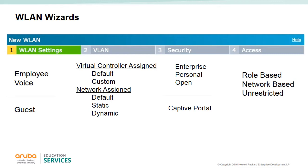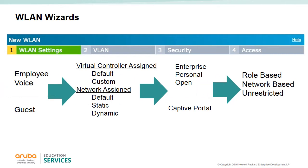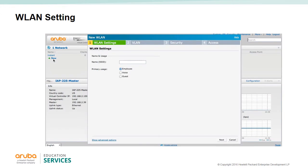The wizard is an easy way to configure the SSIDs you need for your IP cluster. You will go through four stages when utilizing the wizard. The first stage is to select the type of SSID: employee and voice selections lead to 802.1x and PSK authentication, while the guest option leads to captive portal authentication. The next stage is to select what VLAN and IP address the users will get. The security stage depends on your wireless LAN settings: enterprise gives 802.1x, personal gives PSK or web, and guest gives captive portal options. The last stage is the firewall settings for user rights.